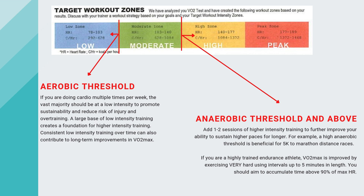Here, the sheet is showing you various training zones: low, moderate, high, and peak. Low refers to your aerobic threshold and below. Moderate is in between your aerobic threshold and anaerobic threshold. High is right around your anaerobic threshold, and peak would be at an intensity where you're trying to hit VO2max. If you're doing cardio multiple times a week, the vast majority of your training should be at a low intensity below your aerobic threshold to promote sustainability and reduce risk of injury and overtraining.